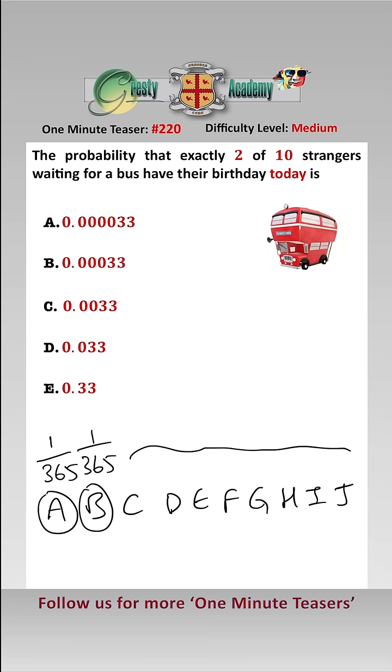All of the other eight must not be having a birthday today, and the probability of that is 364 over 365 to the power of 8.